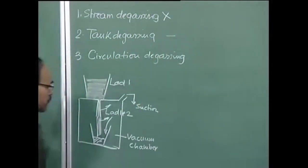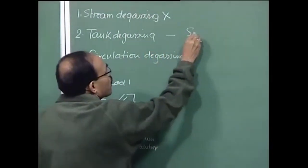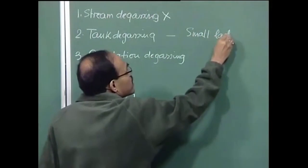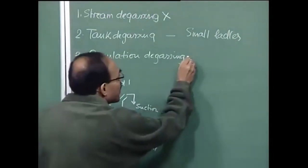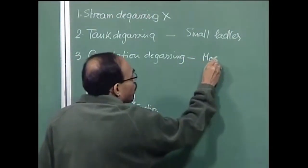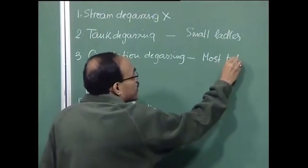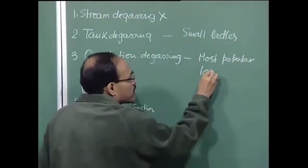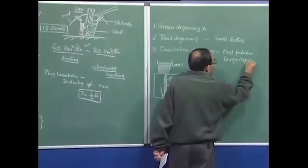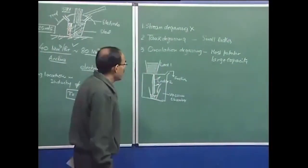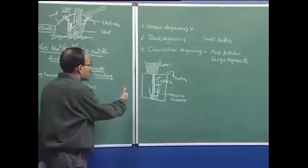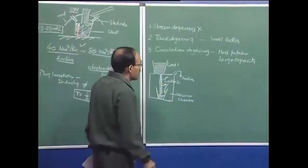Tank degassing is an improved version and is adapted for small ladles — around 50, 60, or 70 tons. Circulation degassing is most popular and is used for large-capacity ladles. The principle everywhere is the same: increase surface area, subject to low pressure, and that is how you eliminate the gas phase. The efficiency of circulation degassing is highest, which is why it has become more popular and is widely accepted for larger-capacity ladles.